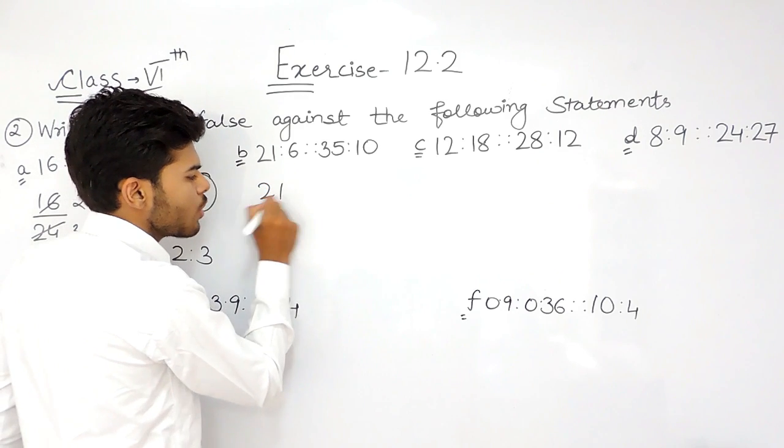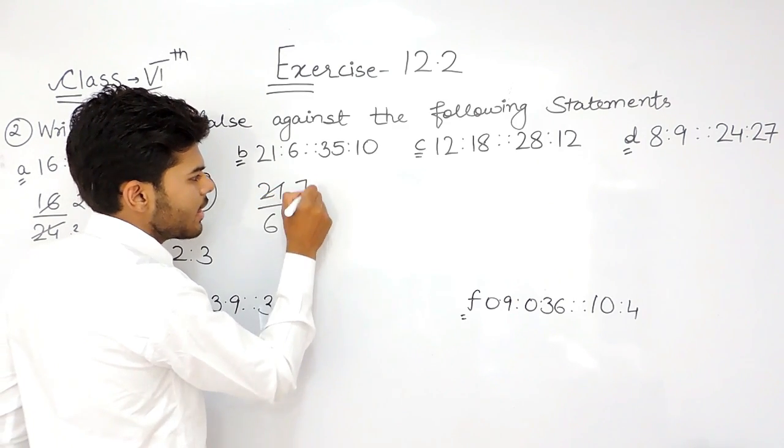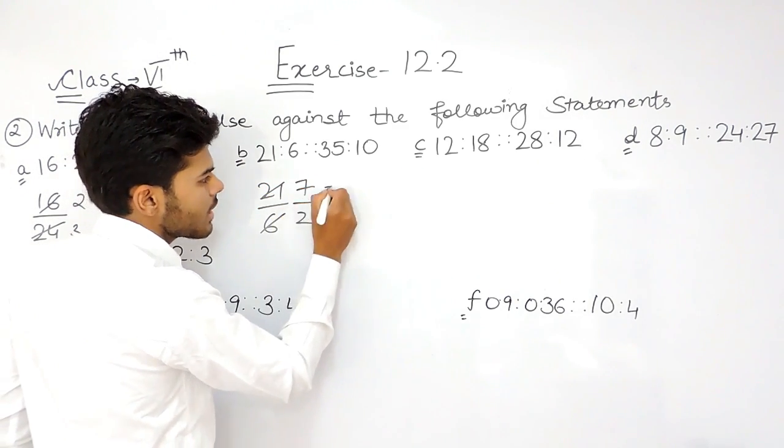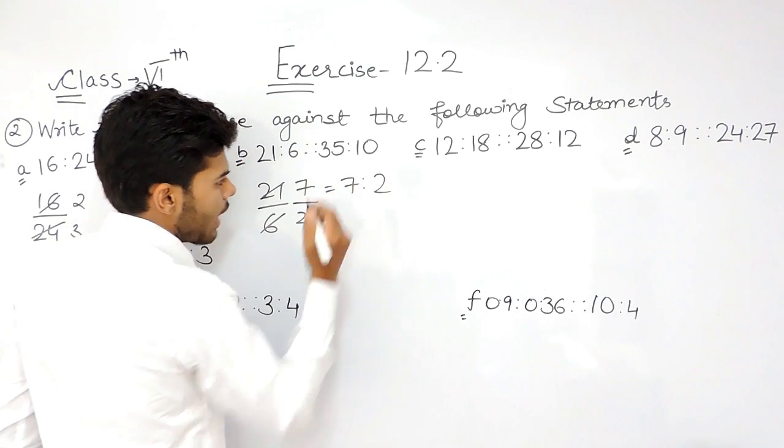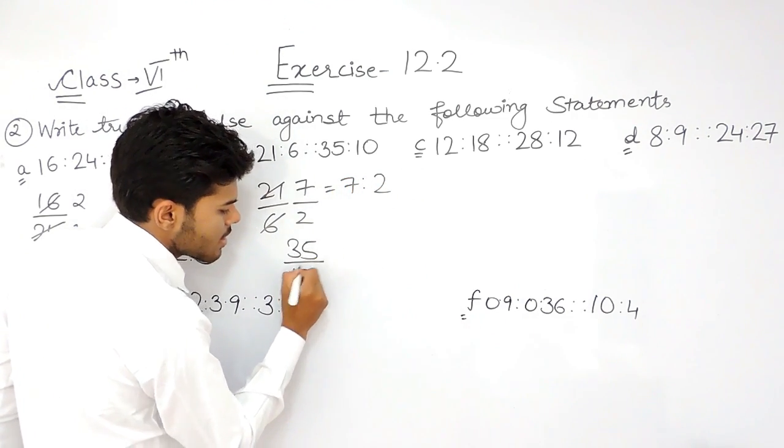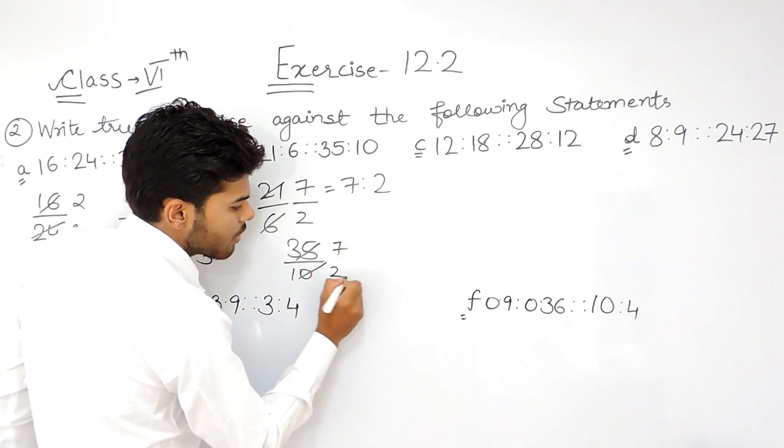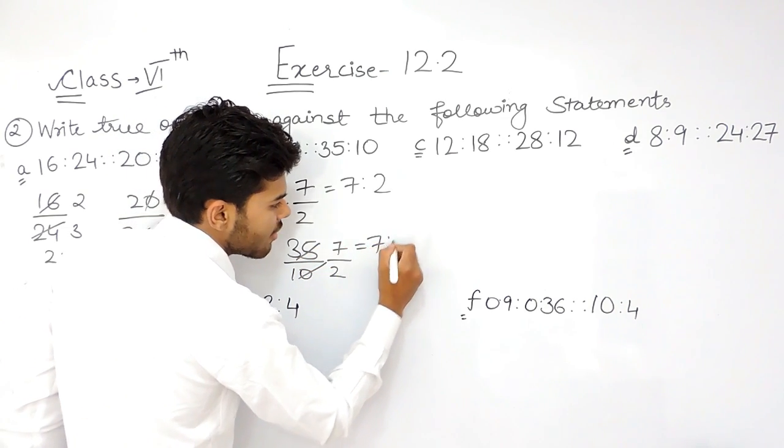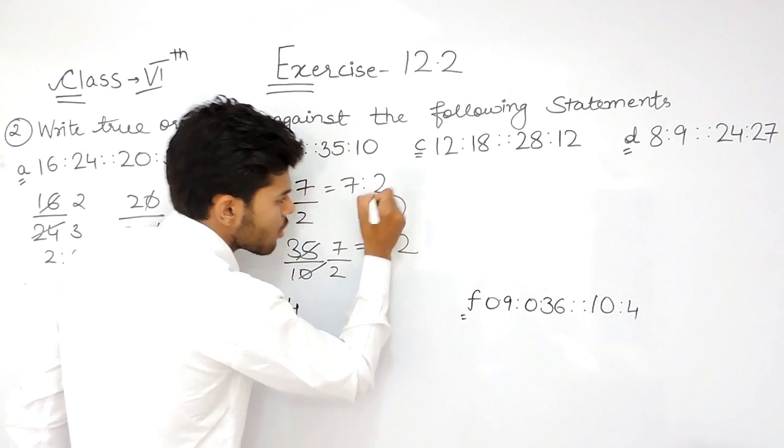Now the ratio of 21 and 6: 7 times 3 is 21, 2 times 3 is 6, so that is 7 ratio 2. And 35 ratio 10: 7 times 5 is 35, 2 times 5 is 10. That is again 7 ratio 2. This statement is also true.